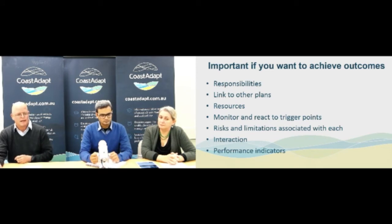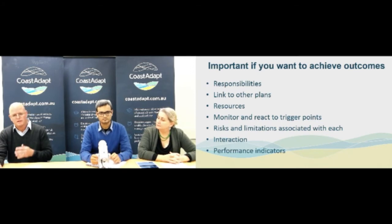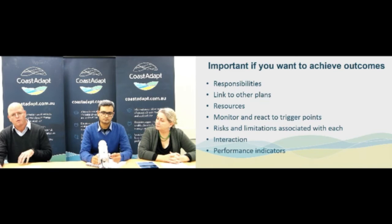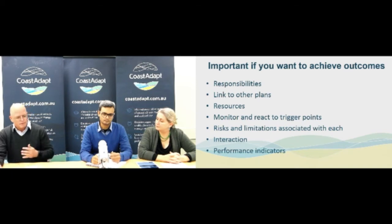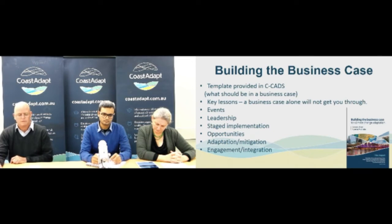If you want to achieve outcomes from your plans, you need to think about who's responsible for various things. Your plan needs to link to other plans, you need to think about what resources are required, and you need to monitor and be able to react to trigger points. All your actions will have risks and limitations — identify those clearly in your adaptation plan. Think about the interaction of your adaptation options with other things you need to manage, and keep an eye on the performance indicators so you can assess outcomes later on.